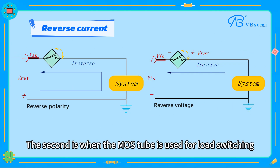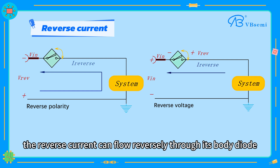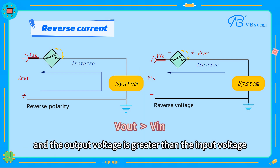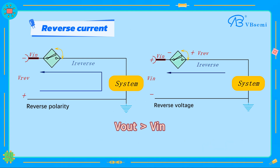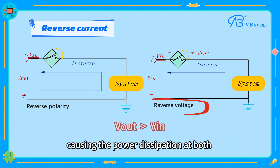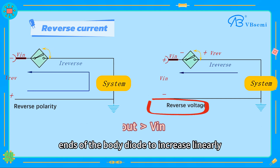The second reason is when the MOSFET is used for load switching. The diode is forward biased, and reverse current can flow through its body diode. When the output voltage is greater than the input voltage, a reverse voltage is generated, causing power dissipation at both ends of the body diode to increase linearly.